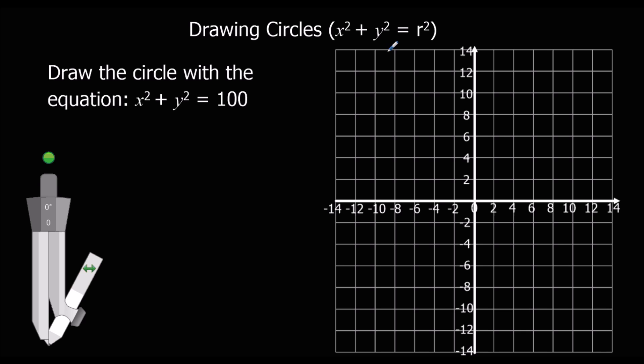So x squared plus y squared equals r squared, and r is the radius. In this example, x squared plus y squared equals 100, so r squared is 100. That means the radius is 10 because 10 times 10 makes 100.